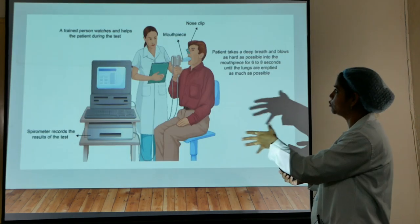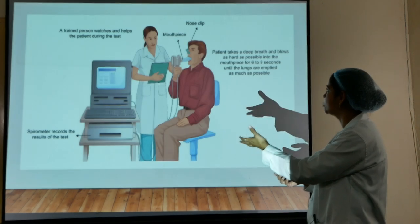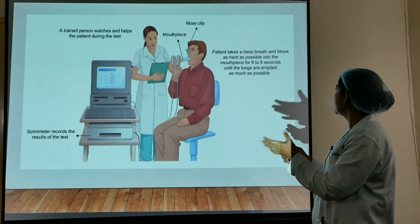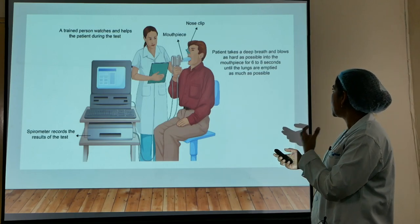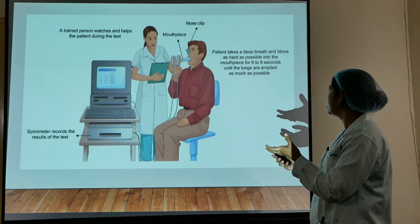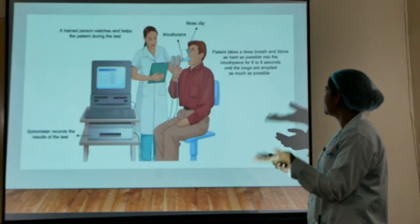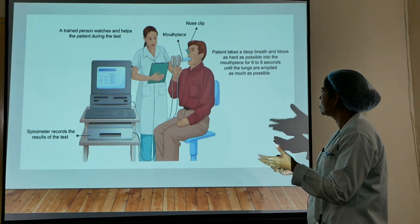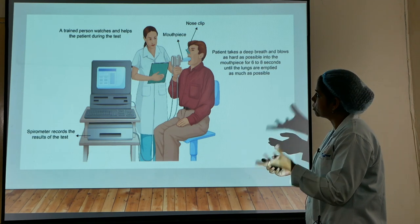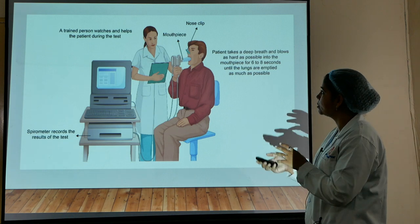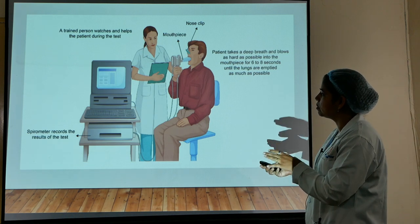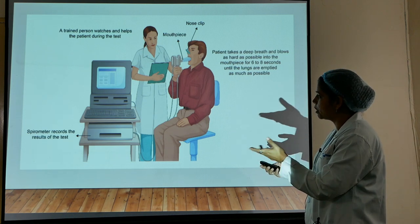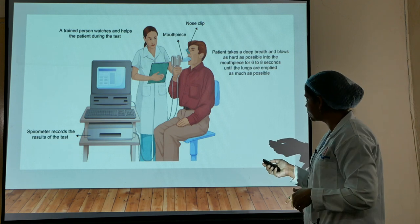Spirometry is ideally performed by having the patient take a deep breath and blow as hard as possible into the mouthpiece for 6 to 8 seconds until the lungs are emptied as much as possible. A trained and qualified person or nursing staff watches and measures the spirometric recordings.